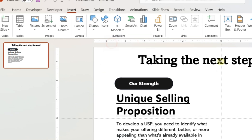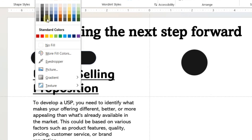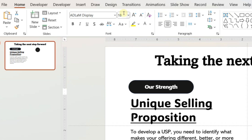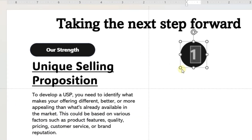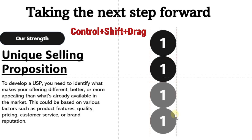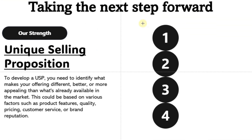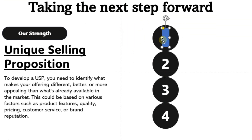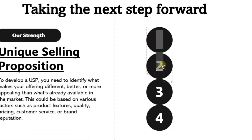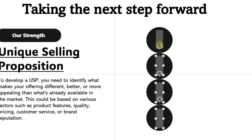Now insert a circle. Format it with black color and no outline. Add a number in the circle. Create three duplicate circles by holding Shift, Control, and dragging the first circle. Change the numbers in the subsequent circles. Now insert a rectangular oval shape and place it on top of the circle covering the number. Change the format to no outline and dark gray color. Create three duplicate copies of the shape and place them on the other circles. Select all the shapes and send to back.